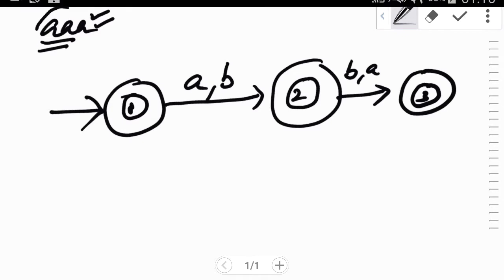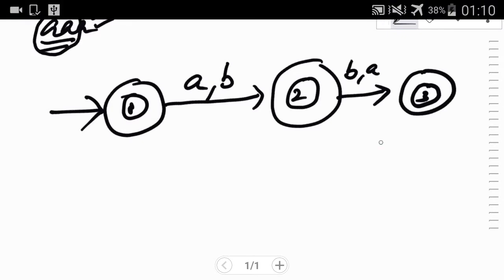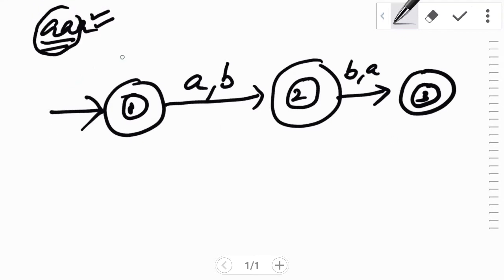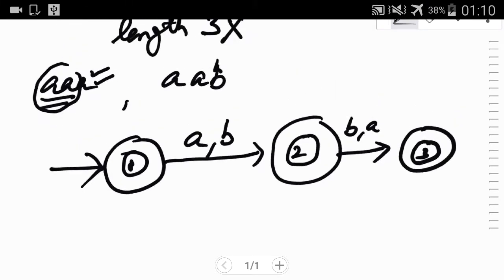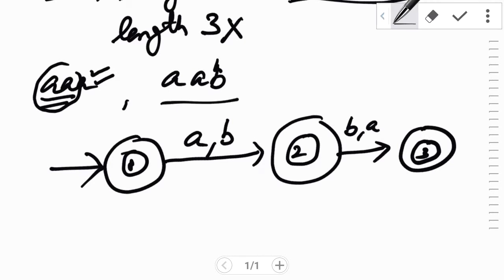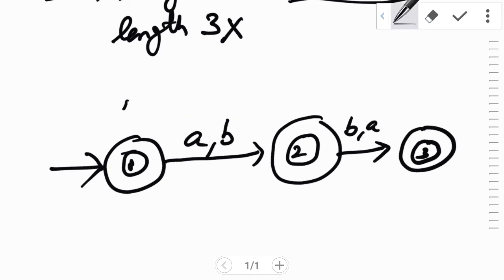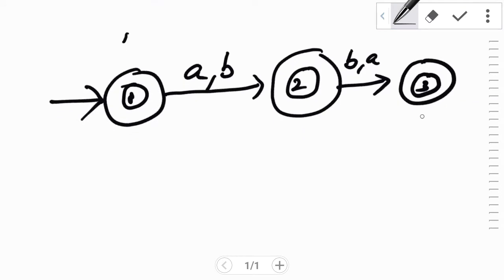Similarly, if we consider double AB, then this string should also not be accepted since the length has been increased to 3. But our DFA is accepting the strings only till length 2. Hence both triple A and double AB cannot be accepted.